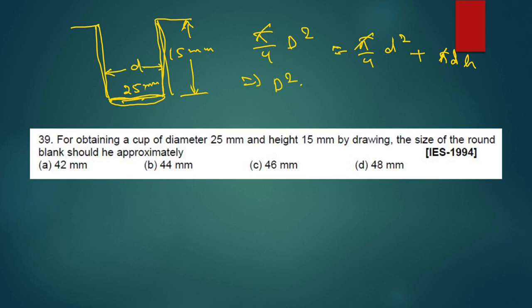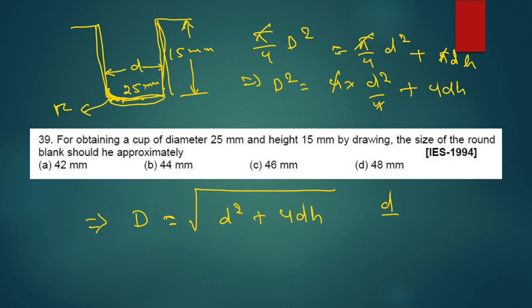From here, pi you can cancel. D square equal to 4 into small d square by 4 plus 4 dh. Then round blank diameter - 4 cancel - D square plus 4 dh, this is the root over. This is when corner radius - corner radius small r. But in this corner radius not mentioned, is greater than 20, this is the case not mentioned. So take this one.